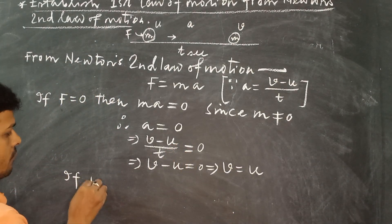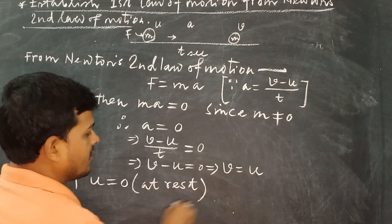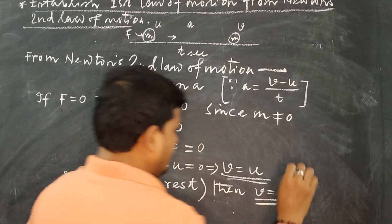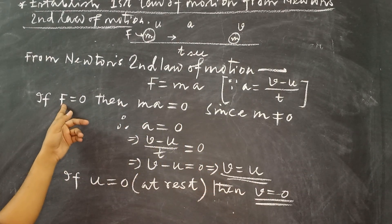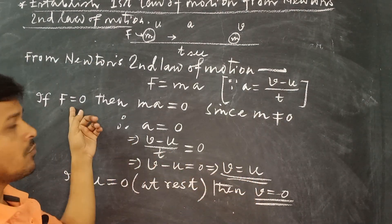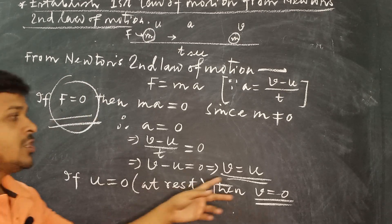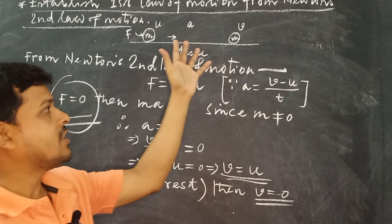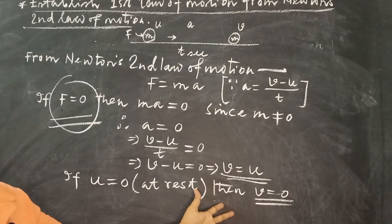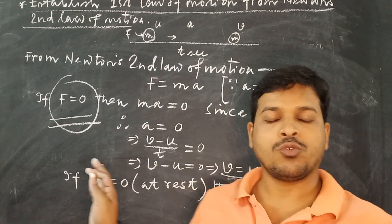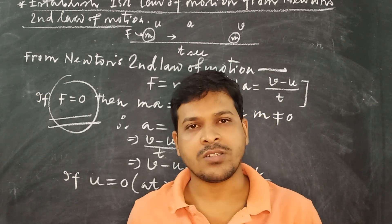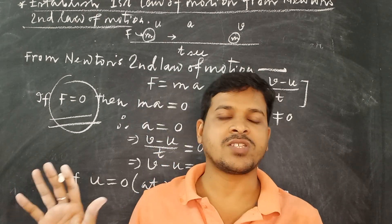Now, if U = 0 — meaning the body is initially at rest — then V = 0 as well. This implies that if no force is applied on a body at rest, it will continue its state of rest. These are the important conclusions where we arrive at Newton's first law of motion from Newton's second law. The above result shows that if no external force is applied on a body, the body which is at rest continues its state of rest, and the body which is in motion continues its state of motion in the same direction.